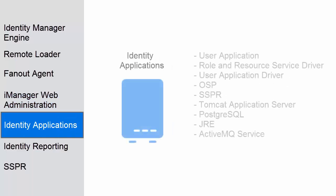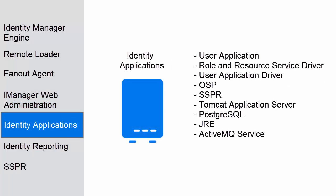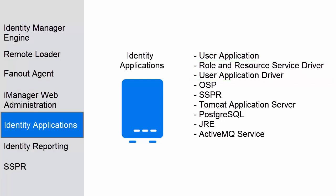Identity Applications: this option installs components such as the Identity Manager dashboard, Identity Manager Administration console, and user application. It deploys the role and resource service driver and the user application driver. It also installs the Tomcat service, Oracle JRE, the ActiveMQ service, the authentication service to support single sign-on, and the password management service to reset your password. It also creates the PostgreSQL database and an administrative user called IDM admin to own the database.